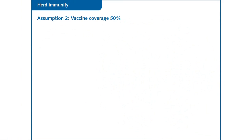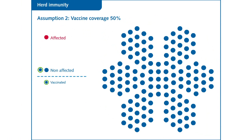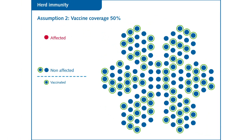Coverage of 50%. Now let's look at the same situation, but this time with 50% of the population having received a vaccine. This would be termed as 50% vaccination coverage. Vaccinated individuals are circled in green. The propagation of the disease is totally different.